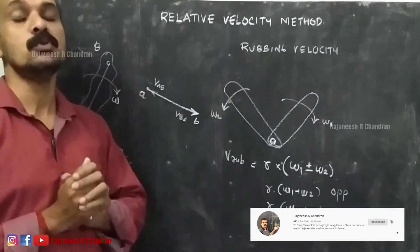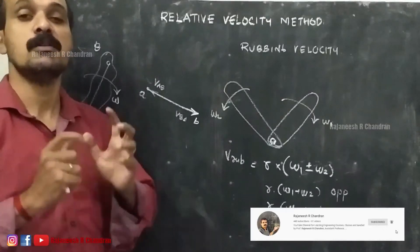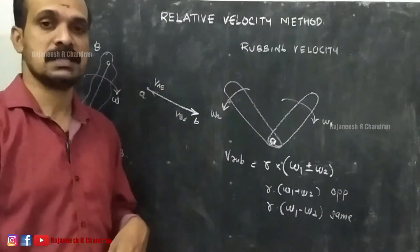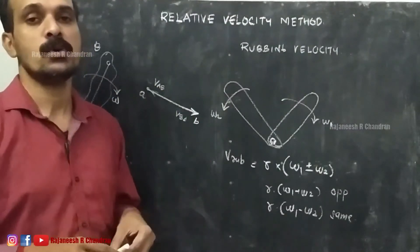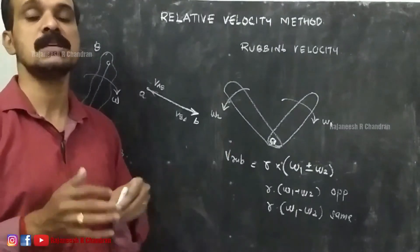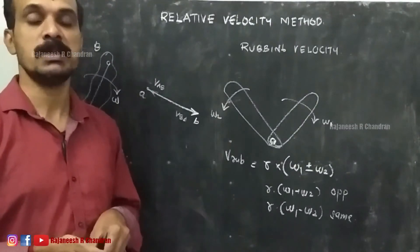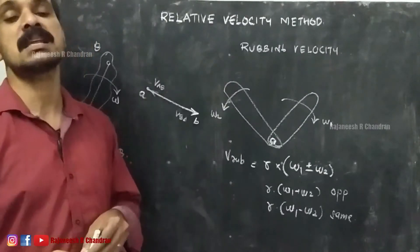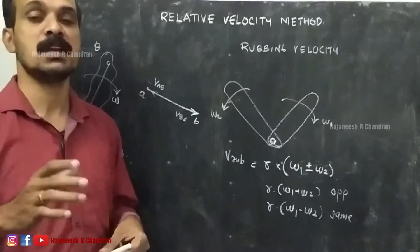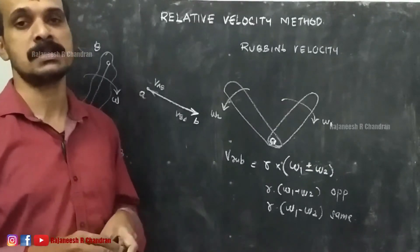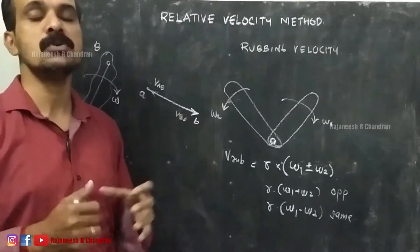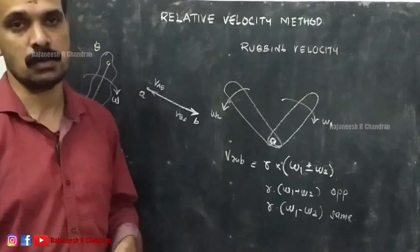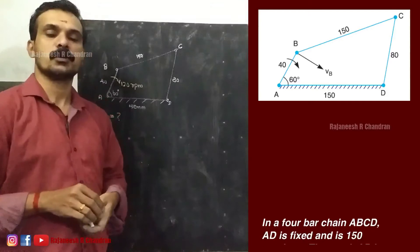Now we are moving to the velocity analysis of a 4-bar mechanism. By doing this, we can understand the step-by-step approach for velocity analysis using the relative velocity method. The relative velocity method is very important because it is the first step for the acceleration analysis of a mechanism — without velocity analysis, we cannot conduct acceleration analysis. The problem is provided on your screen right now.